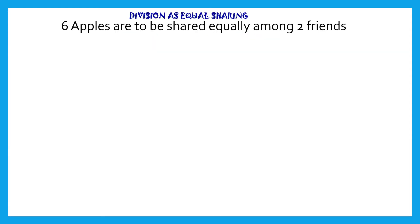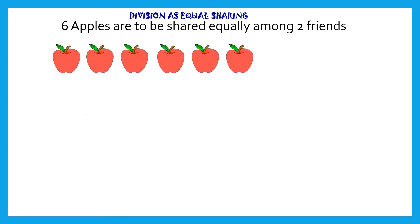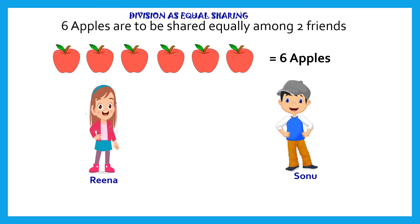Let's consider one example to show division as equal sharing. Six apples are to be shared equally among two friends. We have six apples, and two friends — Rina and Sonu. Let's see how sharing of these apples can take place between these two friends.